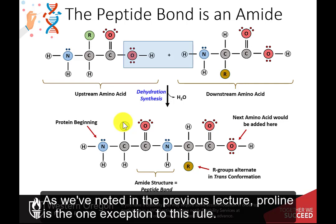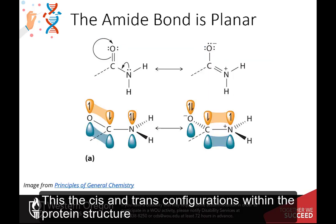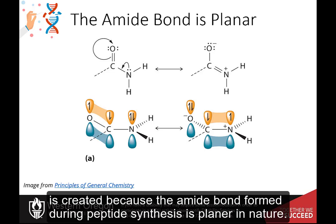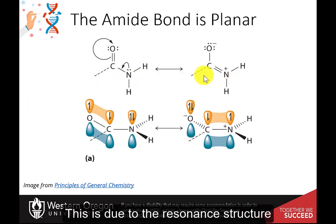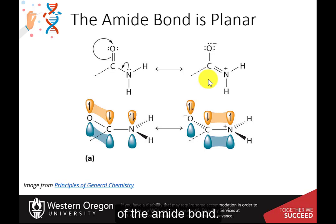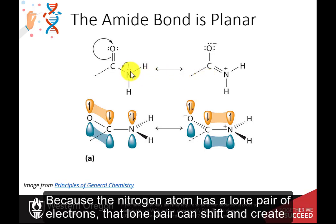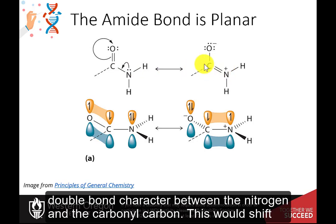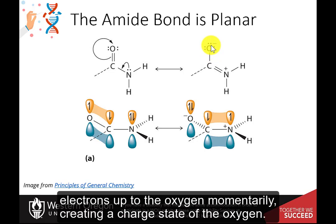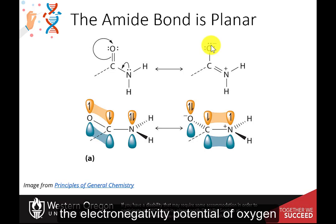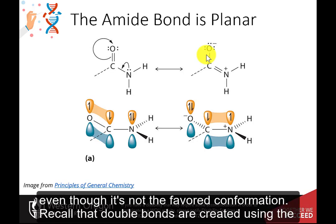As noted in the previous lecture, proline is the one exception to this rule. The cis and trans configurations within the protein structure are created because the amide bond formed during peptide synthesis is planar in nature. This is due to the resonance structure of the amide bond. Because the nitrogen atom has a lone pair of electrons, that lone pair can shift and create a double bond character between the nitrogen and the carbonyl carbon oxygen. This would shift electrons up to the oxygen momentarily, creating a charged state of the oxygen. The electronegativity potential of oxygen allows this state to be possible, even though it is not the favored conformation.